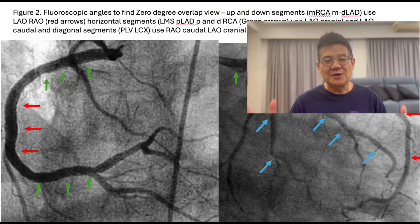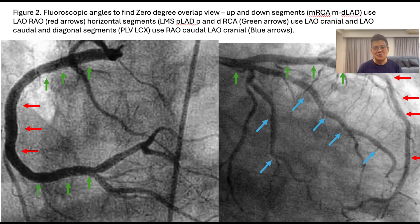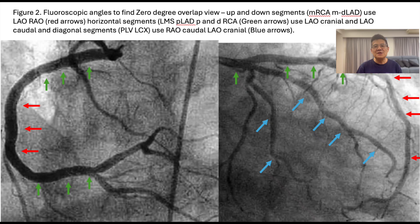If we look in LAO and RAO at the coronary segment, and the segment goes up and down — vertical in both LAO and RAO — such as mid-right coronary or mid-to-distal LAD, then you use LAO and RAO views for 3D wiring.